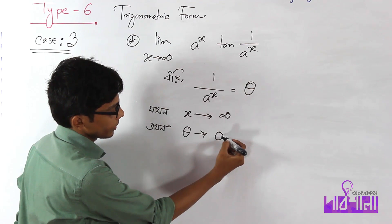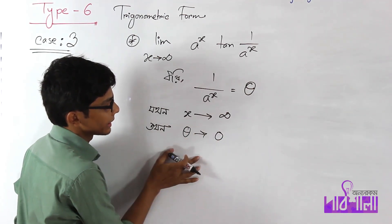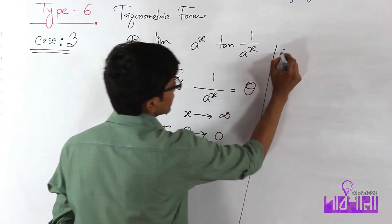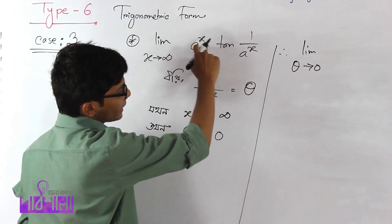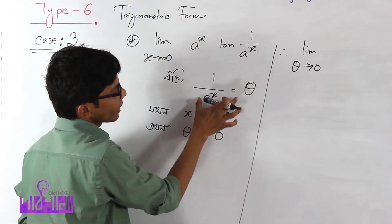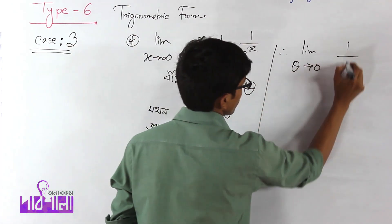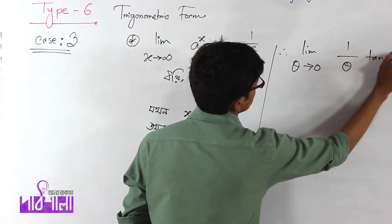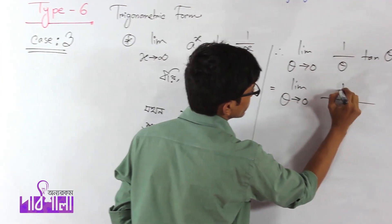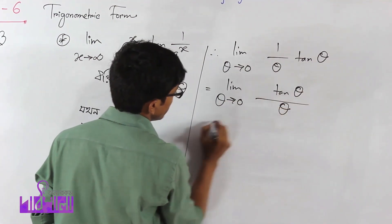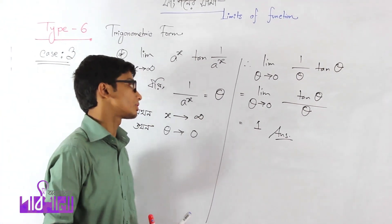So the infinity limit is 0. I'm going to write: let theta tend to 0. Since e to the power x equals 1 by theta, then 1 by e to the power x equals theta. So the expression becomes (1 by theta) times tan theta.